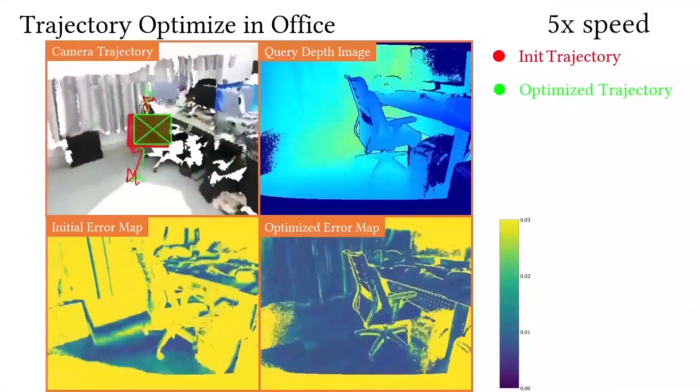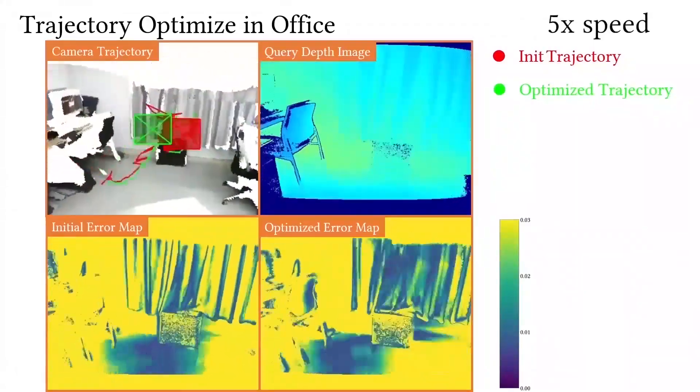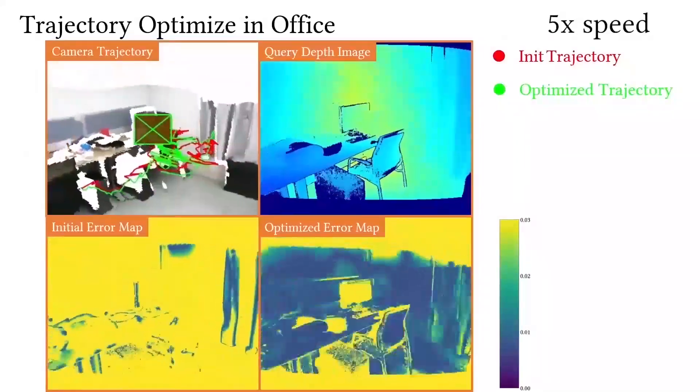Here we show another downstream task, camera relocalization. Given a known scene and a query image, our camera relocalization optimizes a precise camera pose of the query image.